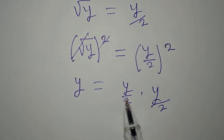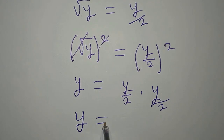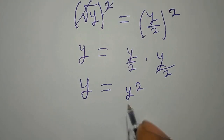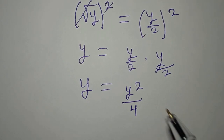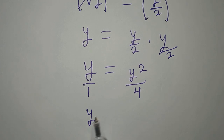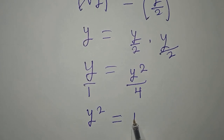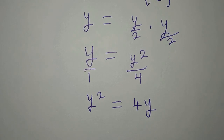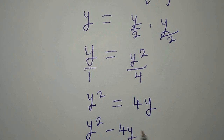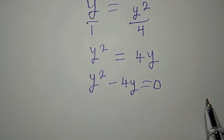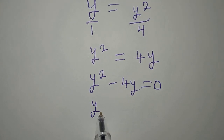So y equals y over 2 times y over 2 because of the squaring on both sides. That gives us y equals y squared over 4. Now we cross multiply to get y squared equals 4y. We have a quadratic equation, so we bring everything to the same side and introduce 0.